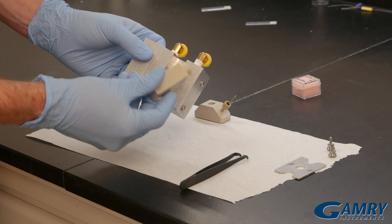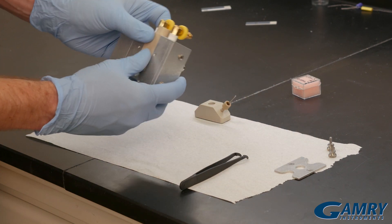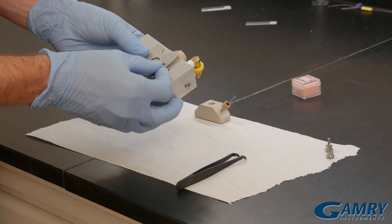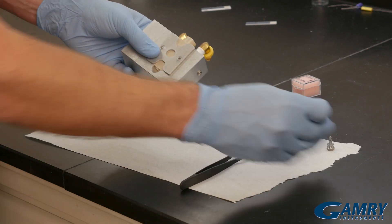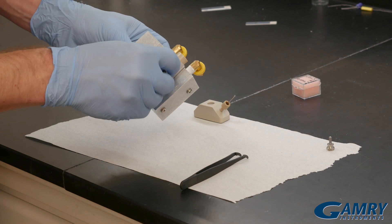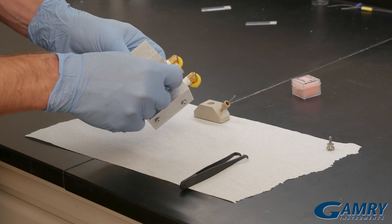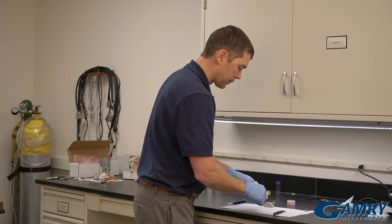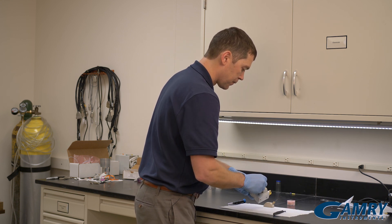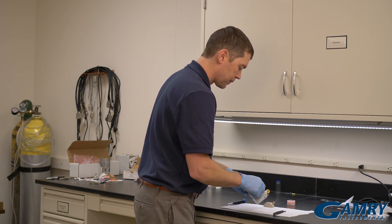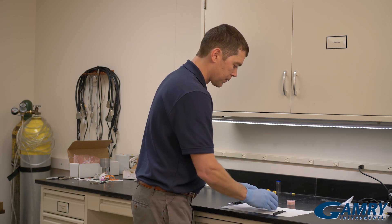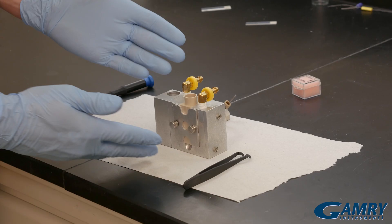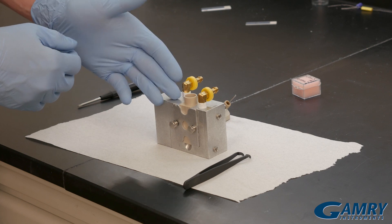So next I can put my static cell on, put the capture plate over top, and use my two thumbscrews to secure it. And there we would have our QCM cell used in a static configuration.